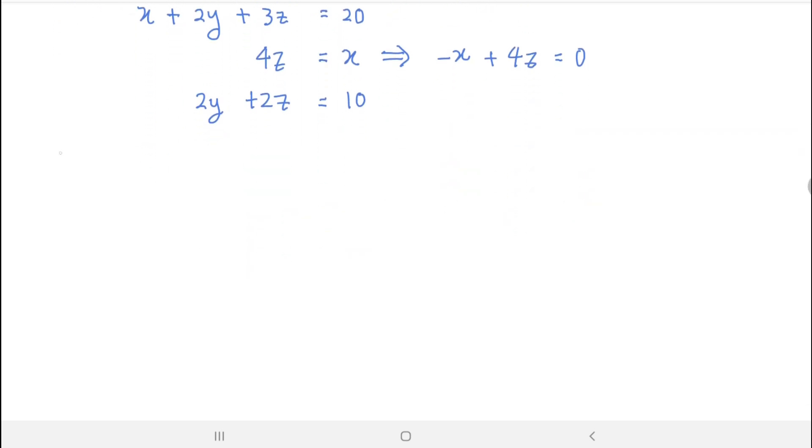For part 2, you transform the equation into matrix equation. You will get: 1, 2, 3; negative 1, 0, 4; 0, 2, 2, times X, Y, Z equals 20, 0, 10. This is A times X equals B.